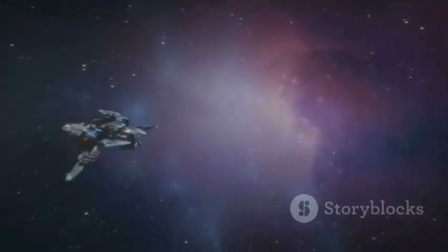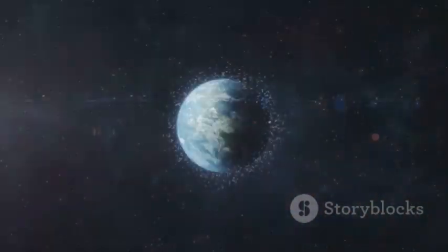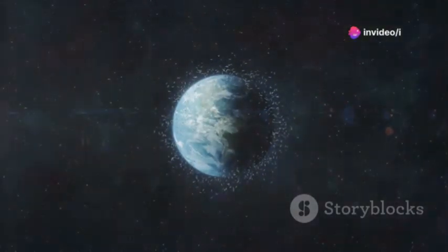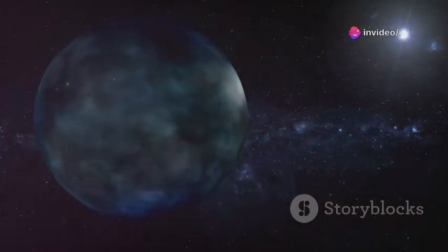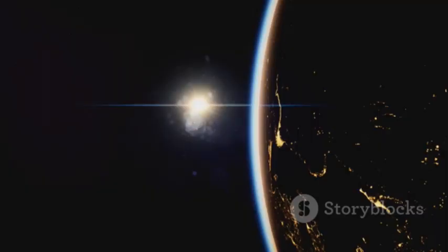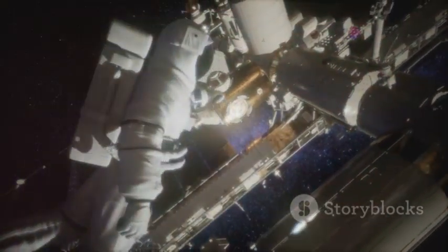Voyager 2's final message transforms that dot from a symbol of loneliness to a symbol of sanctuary. Earth is not just a dot—it is a lifeboat in a raging cosmic storm. The dream of escaping to another star system may be gone. There is no Planet B.